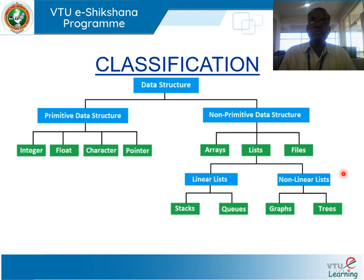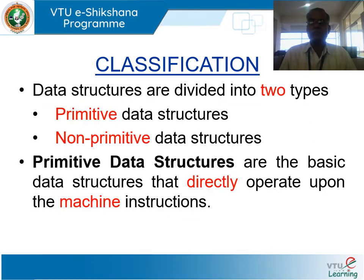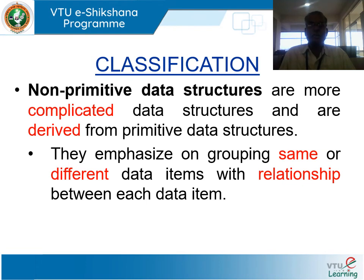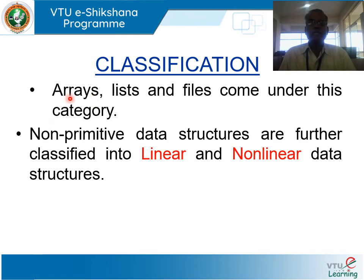Primitive data structures directly operate upon machine instructions and may have different representations on different computers. They include integers, floating point numbers, character constants, string constants, and pointers. Non-primitive data structures are more complex and are derived from primitive types; they emphasize grouping of same or different data items with relationships between them. Examples include arrays, lists, and files.